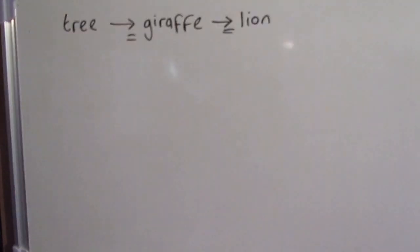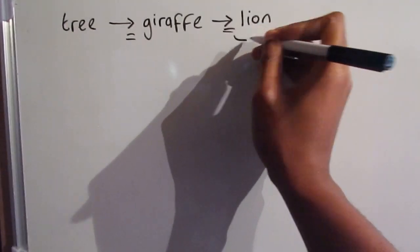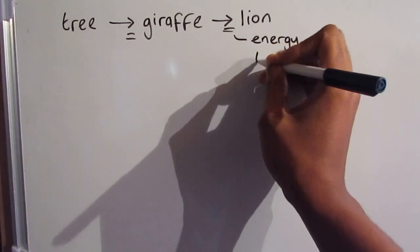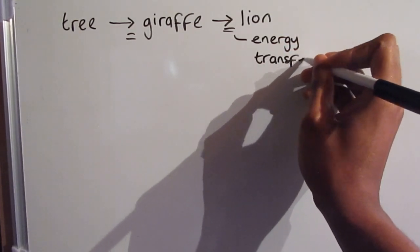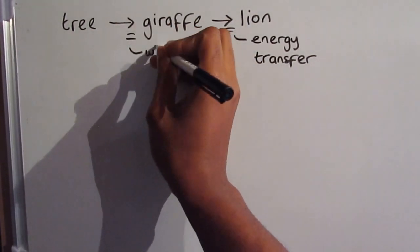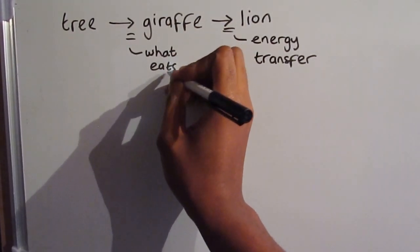The arrow goes from the tree to the giraffe, and from the giraffe to the lion. The arrow tells us two things: which organism is being eaten by which other organism, and the direction of energy transfer.